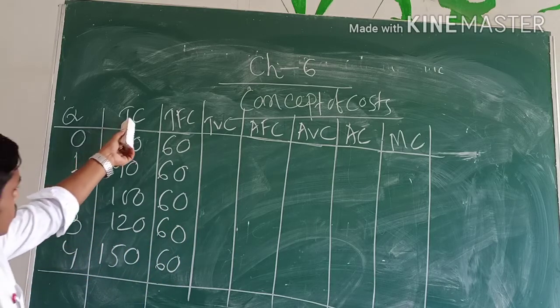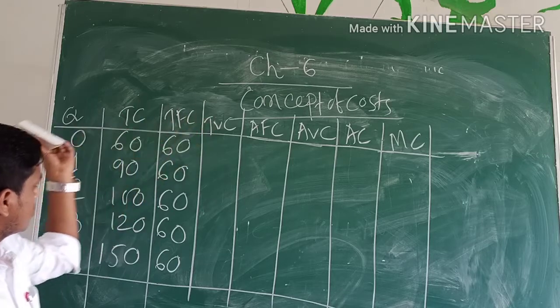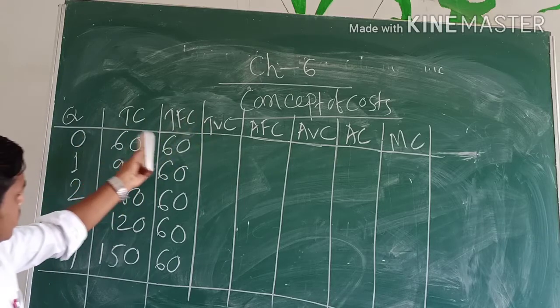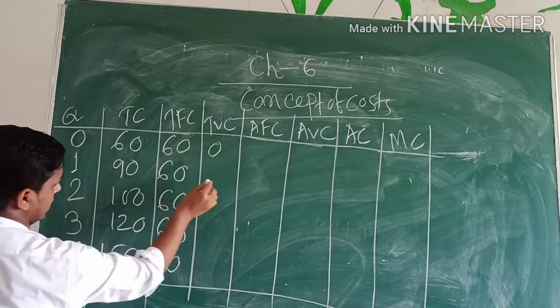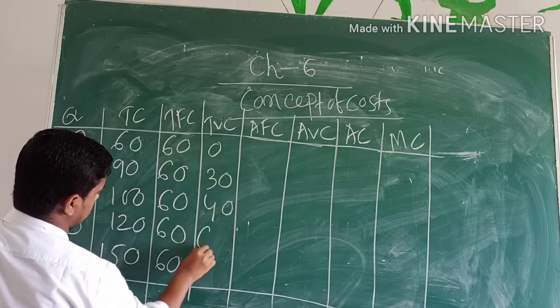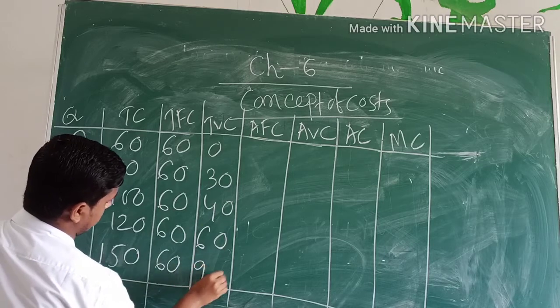Now TVC. We know that TC equals TFC plus TVC, so TVC is equal to TC minus TFC. TVC becomes equal to 0, then 30, 40, 60, then 90.